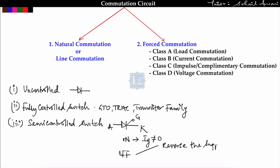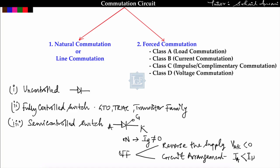To turn off the SCR, what we can do: either we can reverse the voltage polarity — reverse the supply voltage — so if supply voltage is reversed, that is V_AK less than zero, it will go into the reverse blocking mode and turn off. The second method is to arrange a circuit such that the anode current flowing in the SCR must be less than or equal to the holding current. These are the only two methods to turn off an SCR, and this circuit arrangement is done by a commutation circuit.